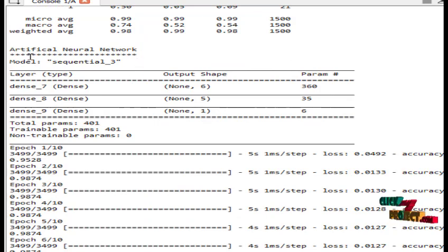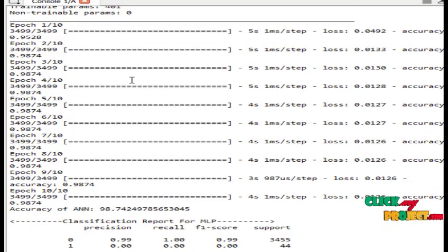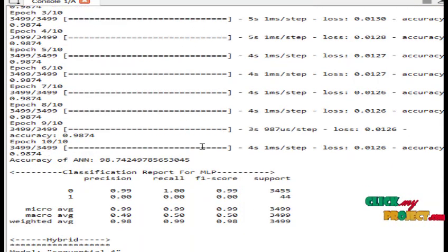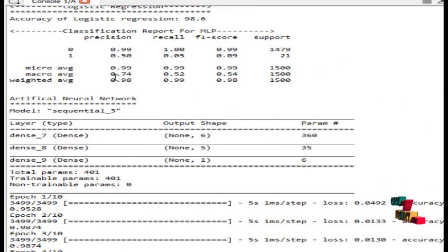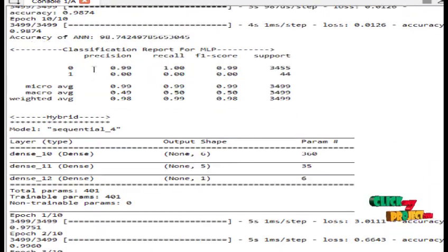Next, deep learning. This is artificial neural network. Epoch is like how many times trained the process. This is the precision, recall, and F1 score support for logistic regression. Precision, recall, F1 score, and support for artificial neural network.